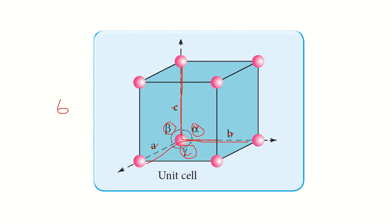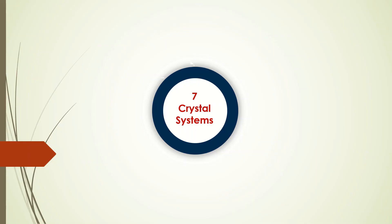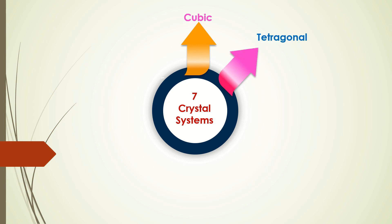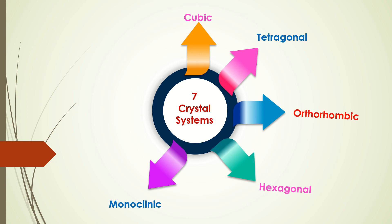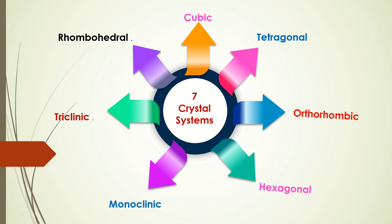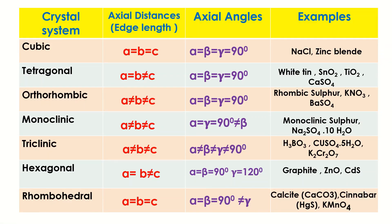By changing the values among these six variables, we can get seven crystal systems: cubic, tetragonal, orthorhombic, hexagonal, monoclinic, triclinic, and rhombohedral. These are the seven crystal systems, and there are corresponding axial distances, axial angles, and examples of crystals. It is somewhat difficult to remember the angles and axial distances, so we use the shortcut 'See Tom There' to understand them easily.